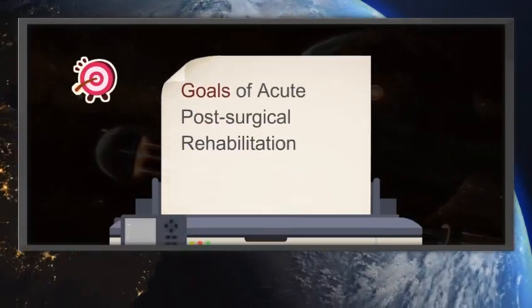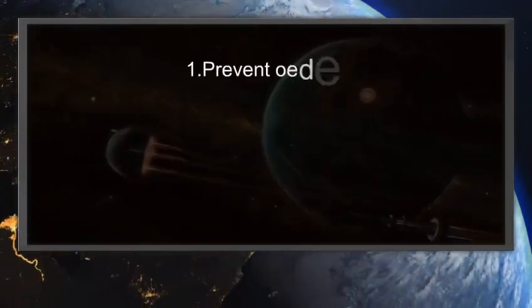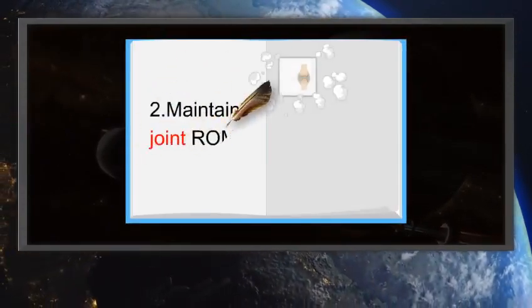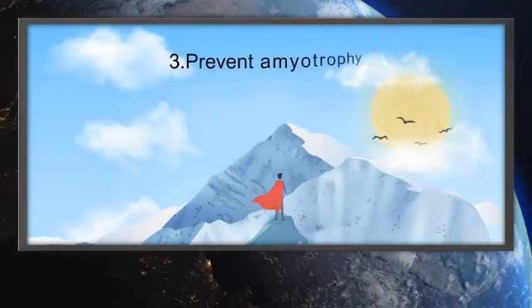Goals of Acute Post-Surgical Rehabilitation: 1. Prevent Edema, 2. Maintain Joint ROM, 3. Prevent Amyotrophy